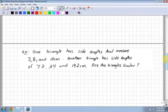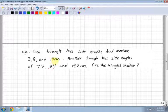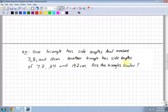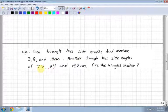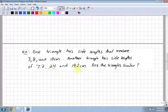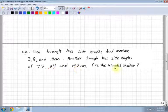Last example. One triangle has side lengths that measure 3, 8, and 10 centimeters. Another triangle has side lengths of 7.2, 24, and 19.2. Are the triangles similar? You're not given a picture this time.